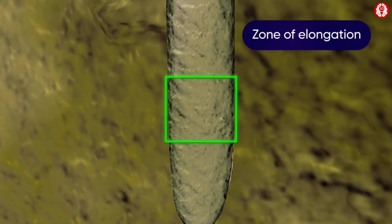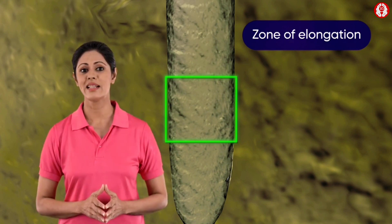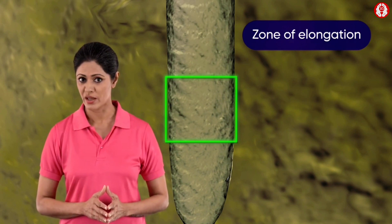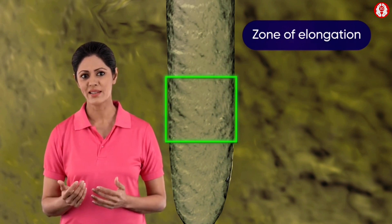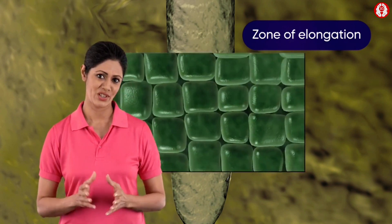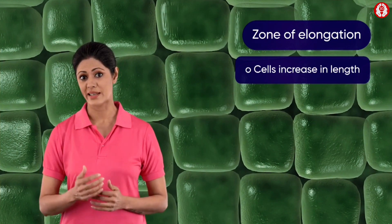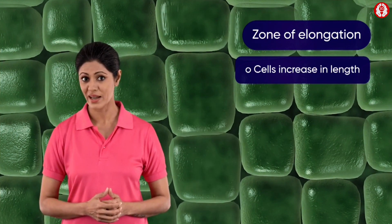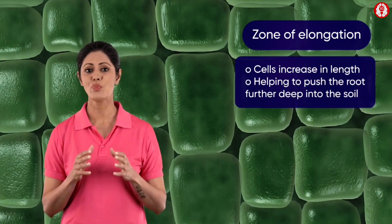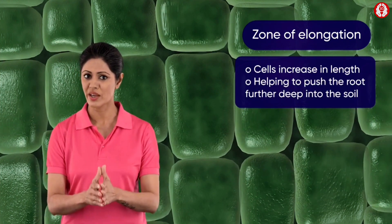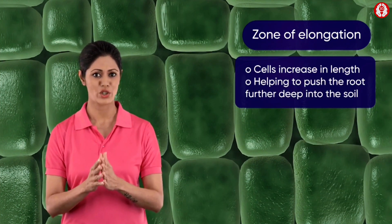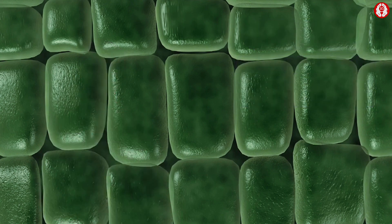Above the zone of cell division lies the zone of elongation. The cells of this region are more or less parenchymatous and increase in length, thereby helping to push the root further deep into the soil.